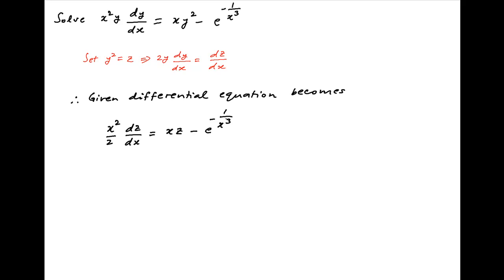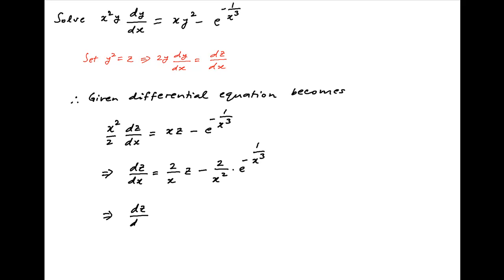Now multiply both sides with 2 upon x square, and therefore we get dz upon dx is equal to 2 upon x times z minus 2 upon x square times e raised to the power minus 1 upon x cube. This can be rewritten as dz upon dx minus 2 upon x times z is equal to minus 2 upon x square times e raised to the power minus 1 upon x cube.